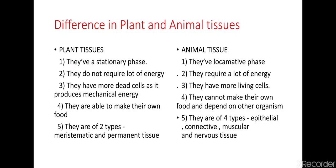Plant tissues have a stationary phase — plants remain fixed at a particular place. Whereas animal tissues have a locomotive phase, meaning animals are mobile and have to move in search of food and shelter. Plant tissues do not require a lot of energy because most plant tissues are dead. Animal tissues require a lot of energy because most tissues in animals are living.